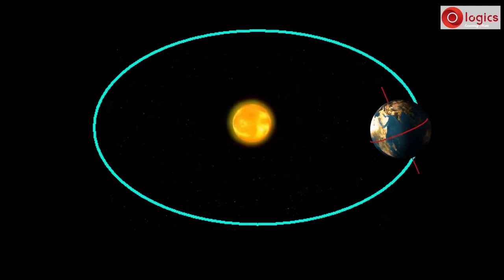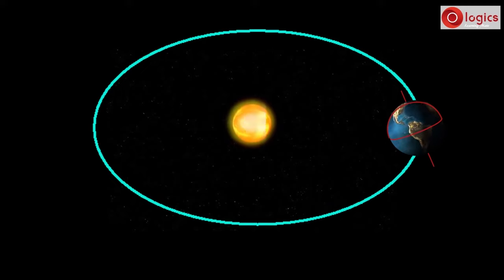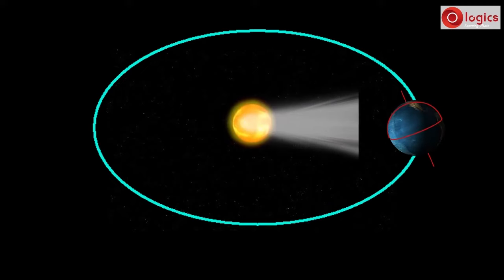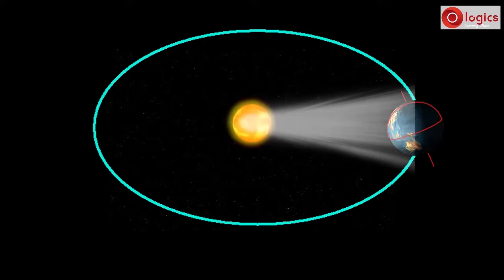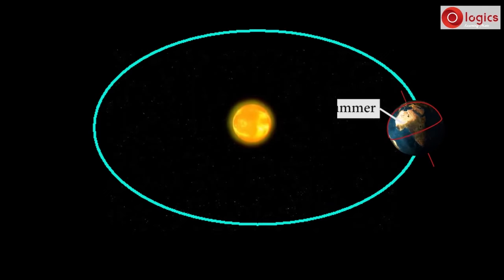When Earth is in this region of orbit, northern hemisphere of Earth exposes to more sunlight. Northern hemisphere will have summer, and southern hemisphere will have winter.